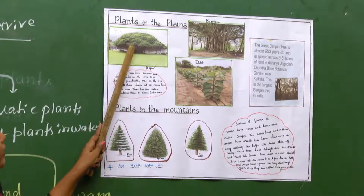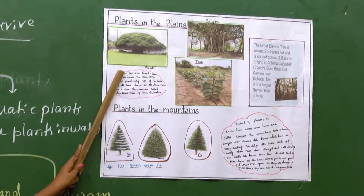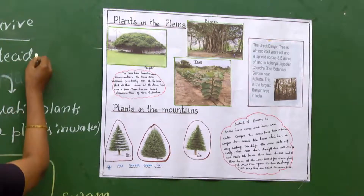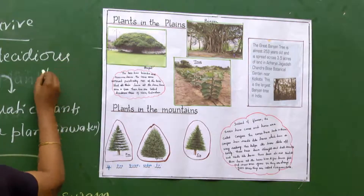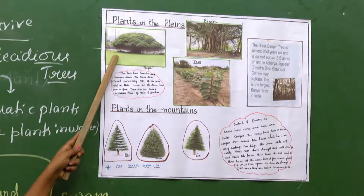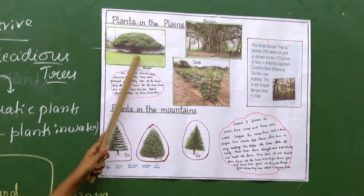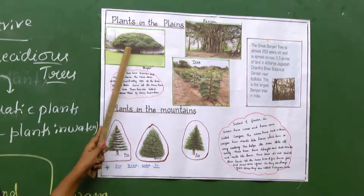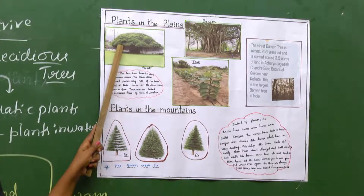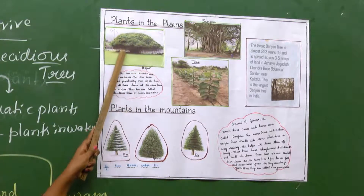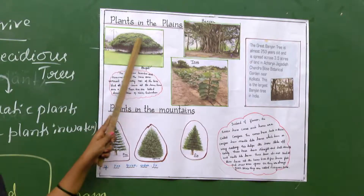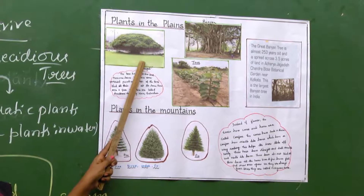Most trees shed all their leaves at the same time, once a year. These trees are called deciduous trees, because they are going to shed their leaves simultaneously, all at once per year.